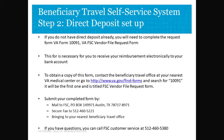The instructions to the form are found on the back. Once you've completed the form, you can either mail it to the address you see in front of you, secure fax it, or hand carry it to your nearest Beneficiary Travel Office. If you have any questions, you can call the FSC at area code 512-460-5380.